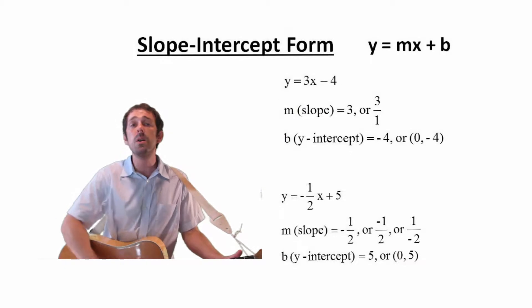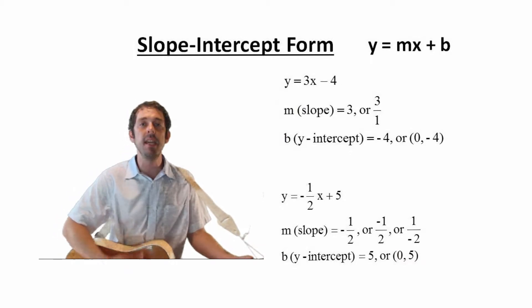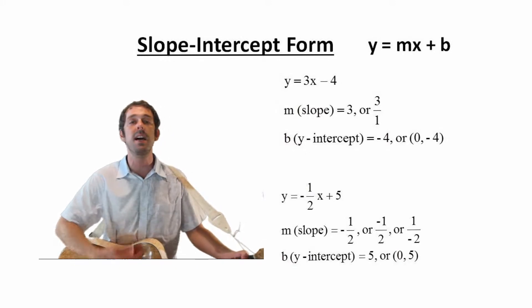Slope-Intercept Form: y equals mx plus b. Solve for y. Get everything else on the other side.